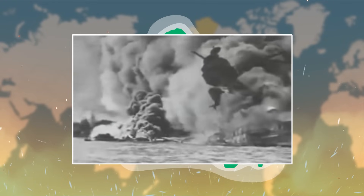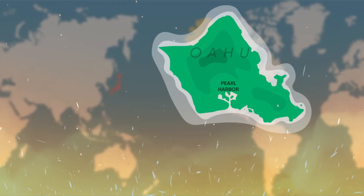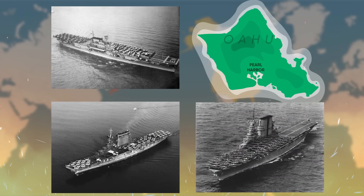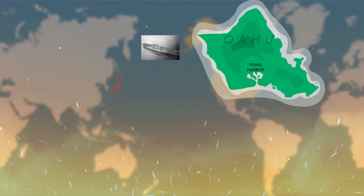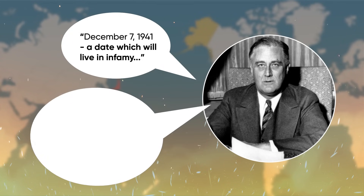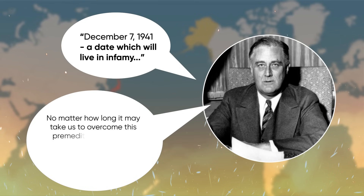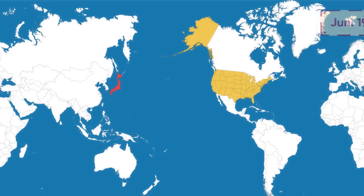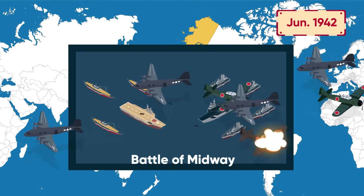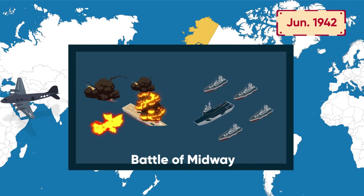No one could doubt that the Pearl Harbor attack caused devastating damage to the US base. However, the assault had failed in its objectives to completely disable the US Navy. No US aircraft carriers were present at Pearl Harbor that day, and Japan was unable to destroy the US vital infrastructure on the island. And instead of goading the United States into an agreement to lift the economic sanctions, the Japanese attack — 'the date which will live in infamy,' as US President Franklin D. Roosevelt termed it — unified the American people in determination to enter the war. In June 1942, the failure at Pearl Harbor came to haunt the Japanese, as the Battle of Midway marked the first major US victory against Japan and was a turning point in the Pacific War.